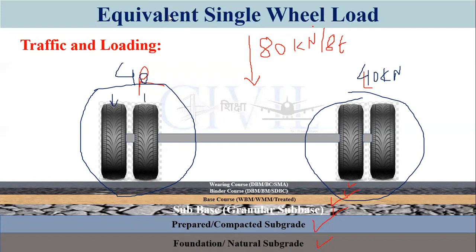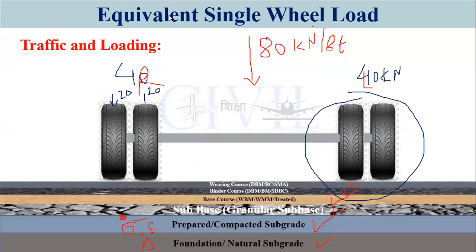When designing a flexible pavement, you consider only the right-hand or left-hand side wheel set of the axle. So you consider tire one and tire two, with the 40 kN split — say 20 kN and 20 kN. These two 20 kN loads cause some stress, strain, and deflection at the top of the subgrade. For design, you need a single wheel load that causes the same stress, strain, and deflection — and that is the ESWL as suggested by Boyd and Foster.